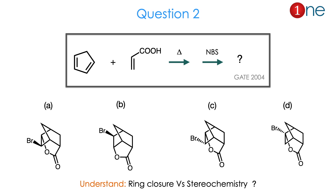Question 2. The starting material is cyclopentadiene. You have an alkene with an acid group. You are using heat and an endo-succinimide dienophile. They ask you to find the product. A new bicyclic system is formed and bromination occurs. The position of bromine and the position of the acid group are important here — the stereochemistry plays a key role. The answer is B.